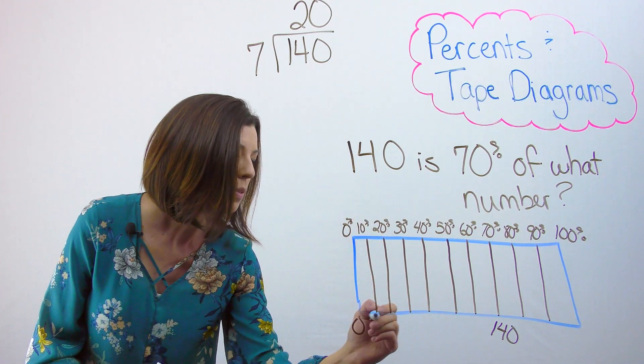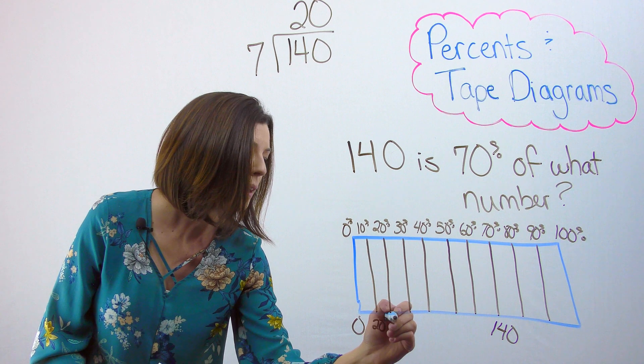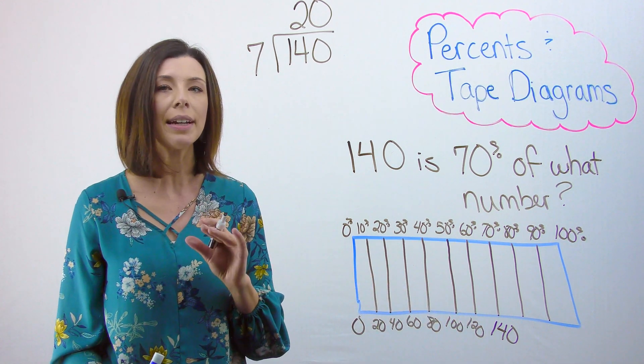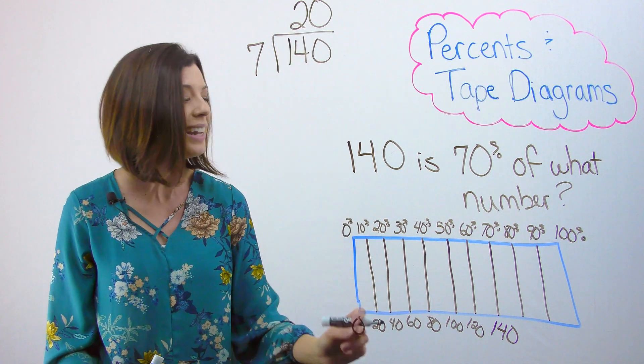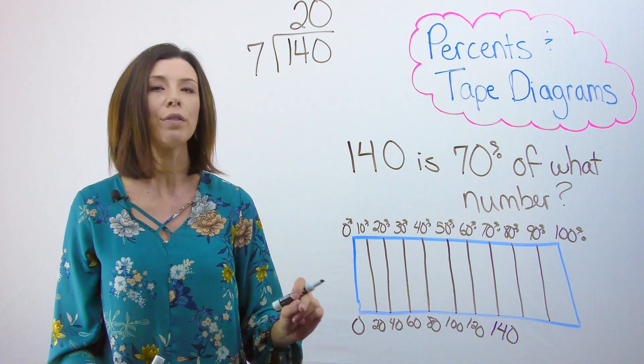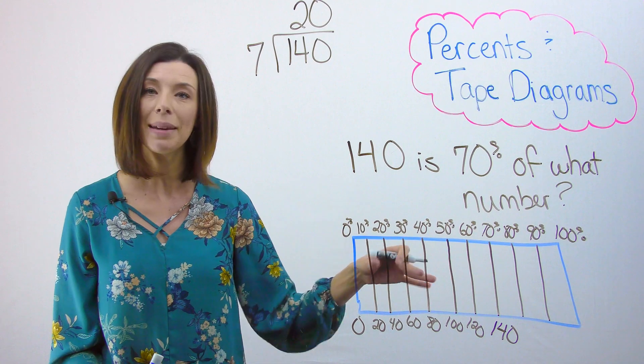So I'm going to start at 0, and I'm going to count by 20s. Now just a little check here. If you're skip counting and you've done this part correctly, you should be landing on 140, and you can see that I am. Let me keep going.